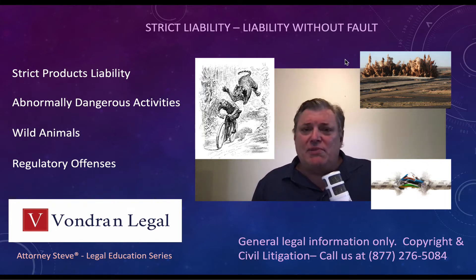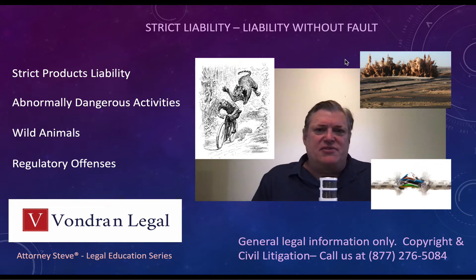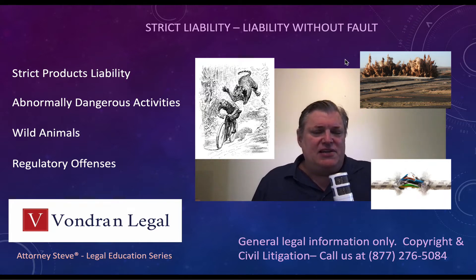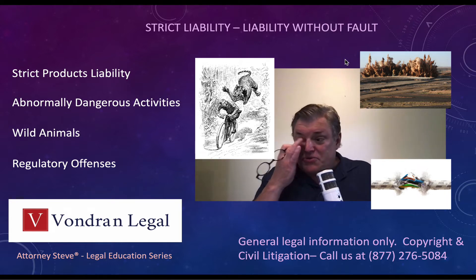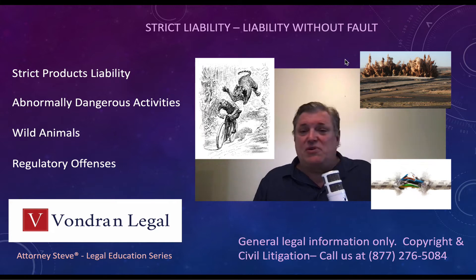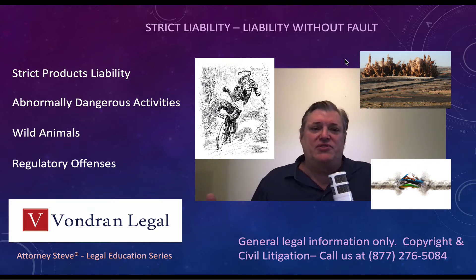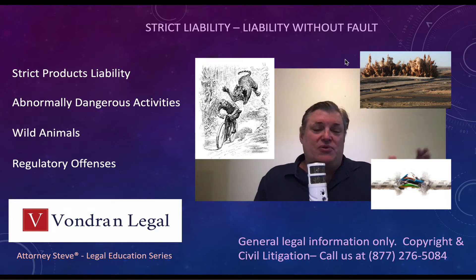The next category is abnormally dangerous activities, sometimes called inherently dangerous activities. These are things like working with explosive demolition, taking down a building, crop dusting — where you really can't control the risk even with the exercise of reasonable care. Things like working with toxic chemicals or nuclear plants are so inherently dangerous that the person who had it within their control can be held liable without having to prove fault or negligence.